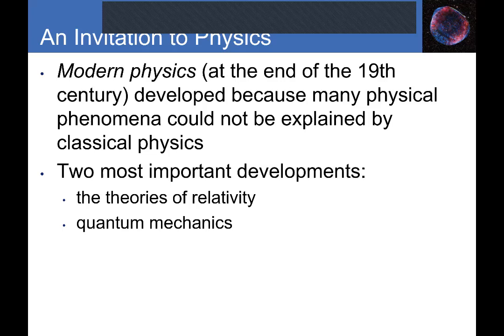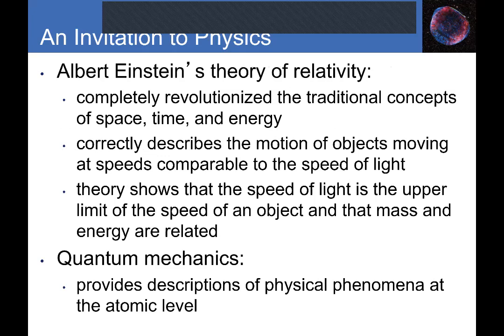Relativity and quantum mechanics will be covered at the very end of Physics 67 — sometimes we get to quantum mechanics, sometimes we don't. Einstein combined ideas about space, time, and energy to describe fast-moving objects, giving rise to things like the twin paradox. Quantum physics provides a description of physical phenomena at the atomic and subatomic level.